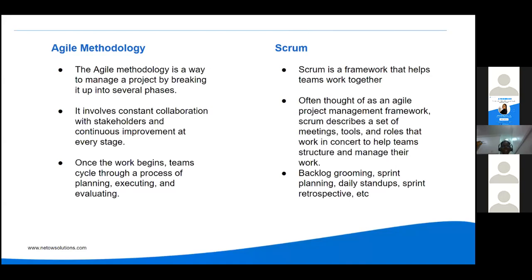In Scrum you have daily stand-ups, sprint planning, backlog grooming, and sprint retrospectives. Backlog grooming is where you've already identified everything you need to build and broken it into epics, stories, and tasks. An epic is a large chunk of what you want to do. A story is the breakdown of that work into actionable components and milestones. A task is the minimum amount of work that needs to be completed for the story to start.